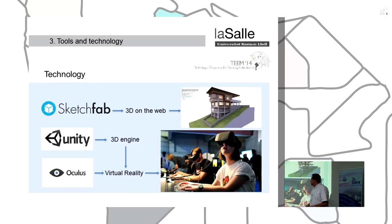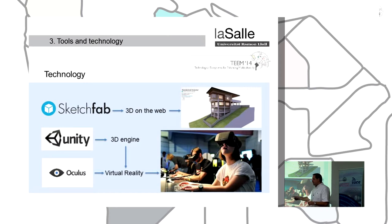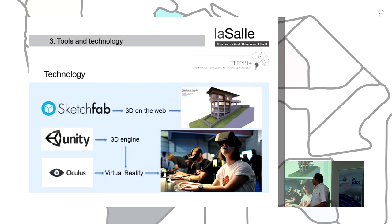In this project, we will use Sketchfab — a tool to use 3D on the web. It's very easy because if we are working with AutoCAD or 3D Studio, the link to Sketchfab is seamless. We don't need to convert files with a loss of information. Students have two options to view the 3D model: viewing on the web using Sketchfab, or using the 3D engine of Unity.